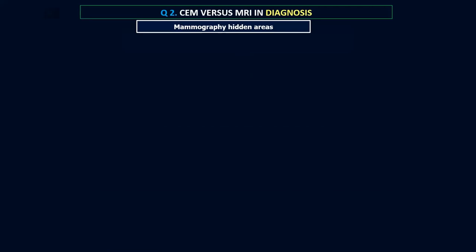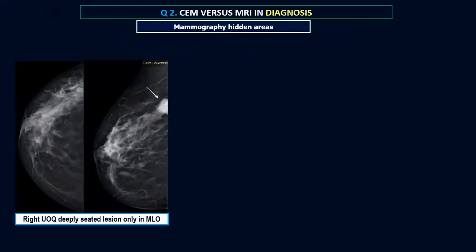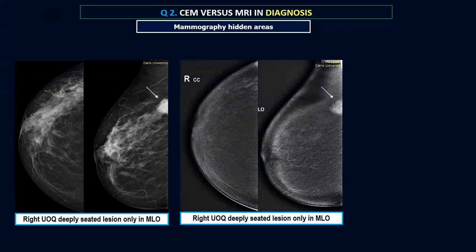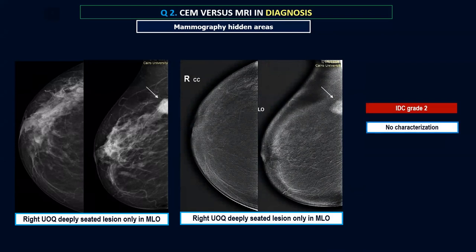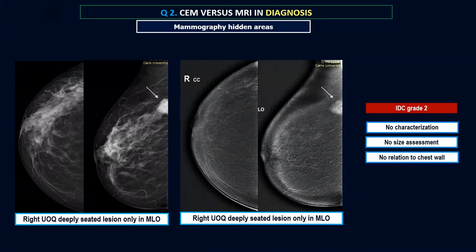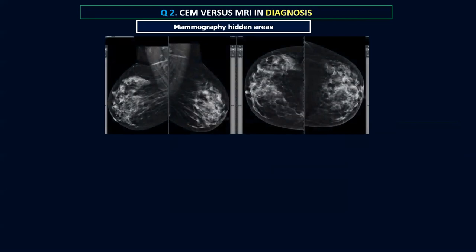Looking at mammography hidden areas: a right upper outer quadrant deeply seated lesion was only seen in the mediolateral oblique view and not seen in the CC view. The contrast mammogram added nothing — no difference was seen. Biopsy revealed an invasive ductal carcinoma grade 2. In the contrast mammography, we could do no characterization for the lesion, could not assess the size, and could not estimate the relation of the lesion with the underlying chest wall or pectoral muscle.